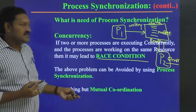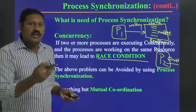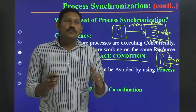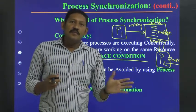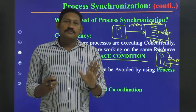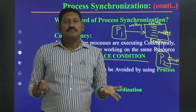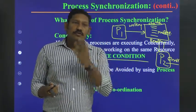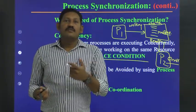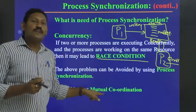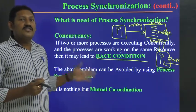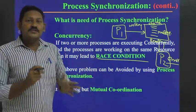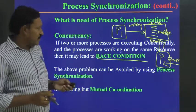The race condition problem can be avoided by using process synchronization. Process synchronization is about mutual coordination — first you go, then I will go. For example, in a hostel room with 3 students and a single washroom, if all three rush at the same time, nobody can use it successfully. They must coordinate: first you go, then the next, then the third. That mutual coordination is what we call process synchronization.